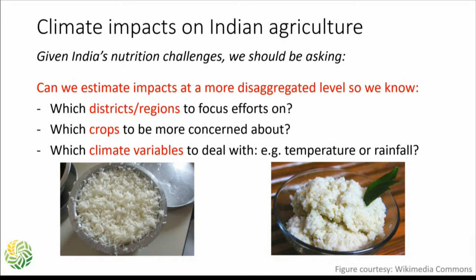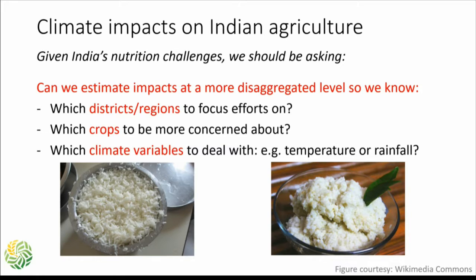When Asha Sharma started her postdoc work, we talked about whether we could get estimates of climate impacts at a much more disaggregated level — at a district level — and whether we could look at crops beyond just rice and wheat. We also wanted to look at whether temperature or rainfall is more important between the two, and whether extreme events also play an important role. These were some of the broader questions we were asking.